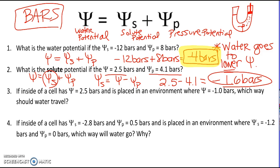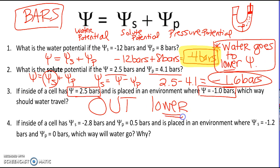Alright. Look at the next one. If inside of a cell has a water potential of 2.5 bars, it's placed in an environment where the water potential is negative 1.0 bars, which way will water travel? So should water go into the cell or out of the cell based on what I told you about water potential? The answer is water will go out of the cell because water always goes towards the lower water potential.